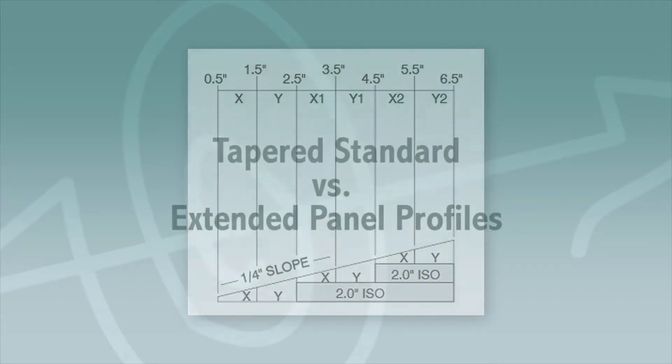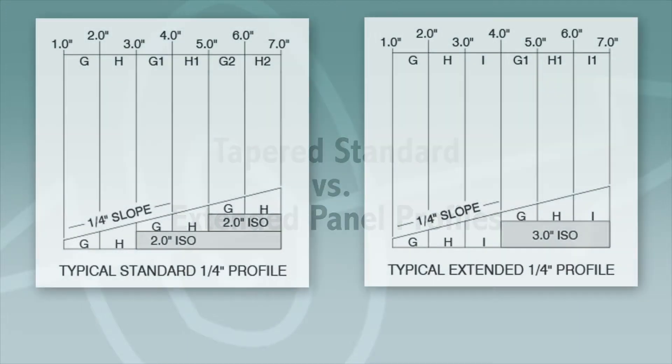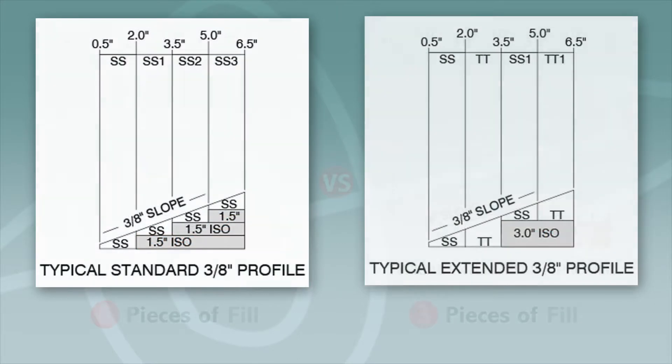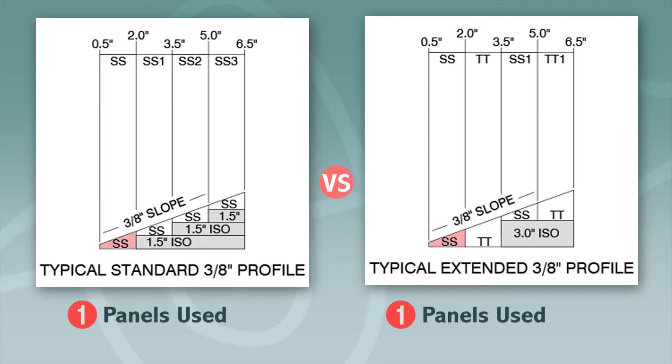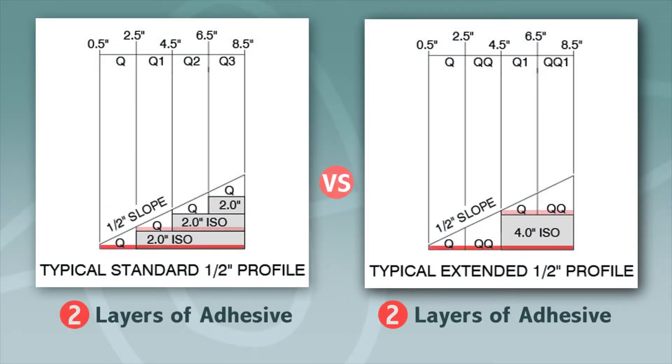Now we will discuss the differences between tapered standard and extended panel profiles. The basic difference is an extended profile consists of more tapered panels and less fill. They reduce labor and handling as fewer panels are installed. Using fewer fill panels in the construction of an extended panel's profile means less adhesive or hot asphalt, and saves time and material costs.